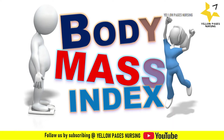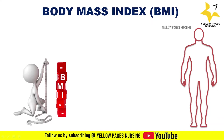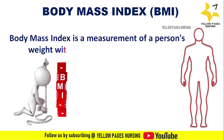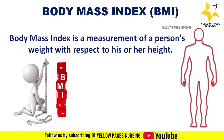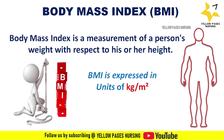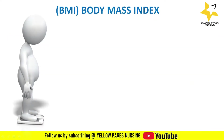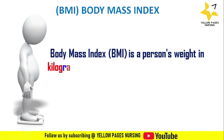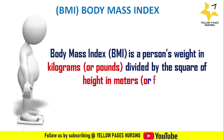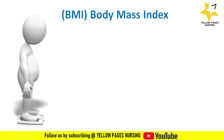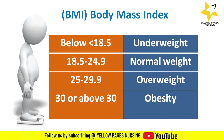Let's get into the topic. What is body mass index? Body mass index is a measurement of a person's weight with respect to his or her height. BMI is expressed in units of kilogram per meter squared. Body mass index is a person's weight in kilograms or pounds divided by the square of height in meters or feet.